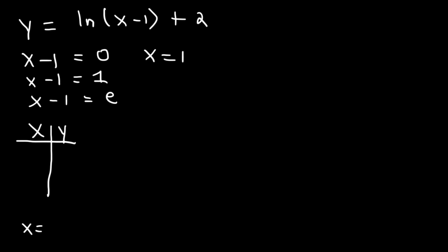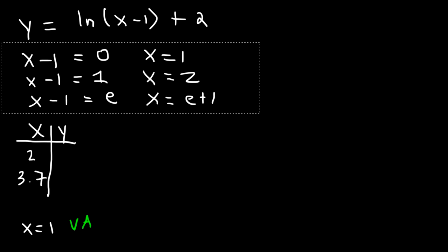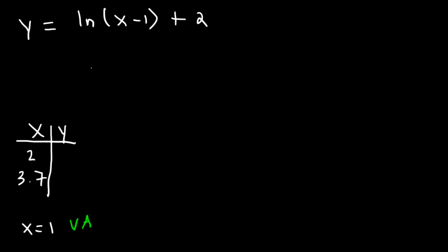And when x minus 1 is equal to 1, if you add 1 to both sides, 1 plus 1 is 2, so x is 2. And if the other one is e plus 1, where e is 2.7, 2.7 plus 1 is about 3.7. So now let's find the y values. So let's plug in 2. 2 minus 1 is 1. ln 1 is 0. 0 plus 2 is just 2.